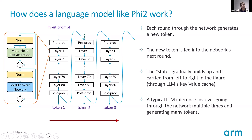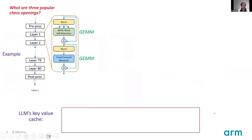This same process is repeated many times through the LLM network until a complete answer is generated. A typical LLM inference involves going through this network multiple times and generating many tokens. For example, given an input prompt such as 'What are 3 popular chess openings?', in the very first round the LLM network generates an output token. Most of the matrix multiplications in the very first round are matrix-matrix multiplications, that is GEMM operations. For subsequent rounds, the LLM also needs the initial prompt along with the token generated so far as input context to generate the next token.